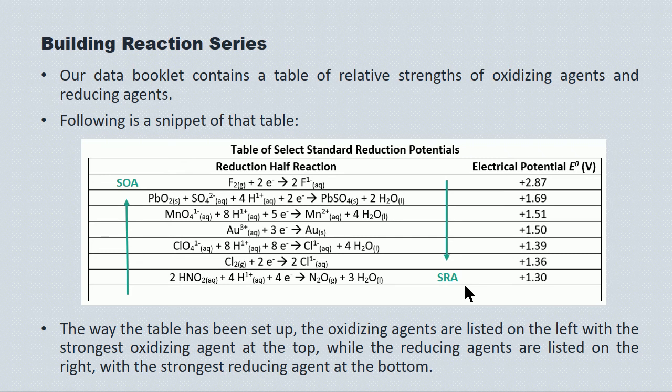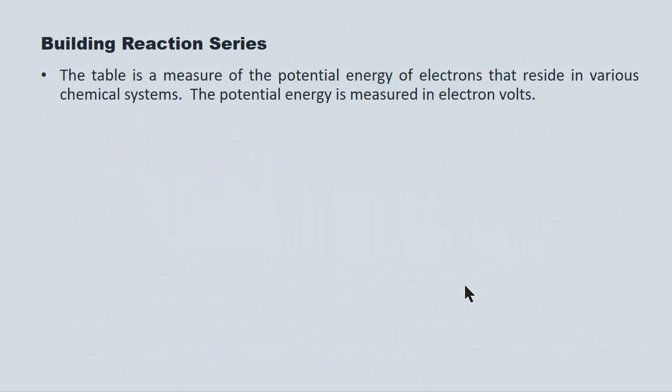The reducing agents are listed on the right with the strongest reducing agent down at the bottom of the page. The alkaline metals and the alkaline earth metals congregate down there — they're very strong electron donors. The table is a measure of the potential energy of electrons that reside in various chemical systems, and the units for that potential energy are electron volts.